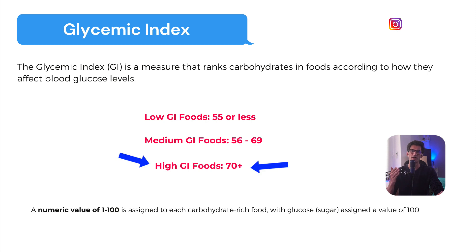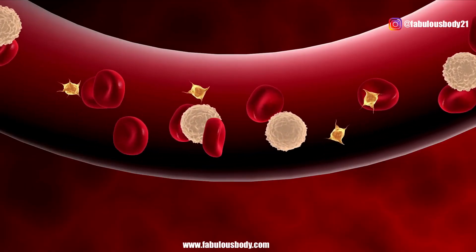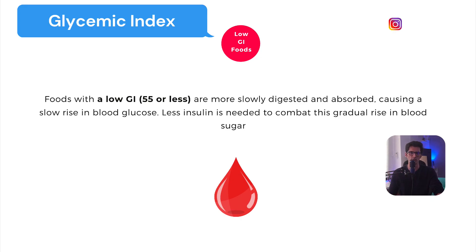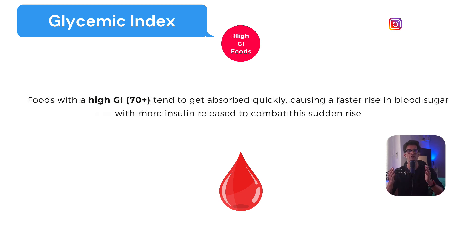Foods with a low GI value of 55 or less are more slowly digested and absorbed, causing a slow rise in blood glucose — less insulin is needed to combat this gradual rise. Foods with a medium GI between 56 and 69 cause a medium rise in blood sugar, and a proportionate amount of insulin is released. Foods with a high GI of 70 and above tend to get absorbed quickly, causing a faster rise in blood sugar with more insulin released to combat this sudden rise.